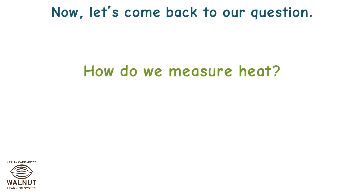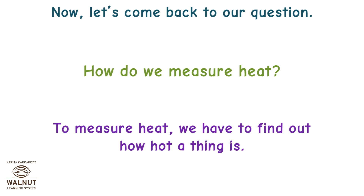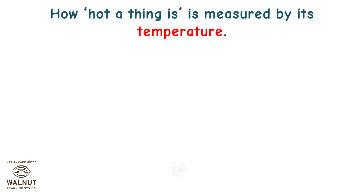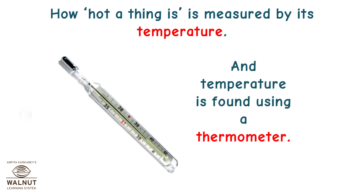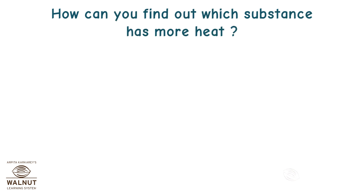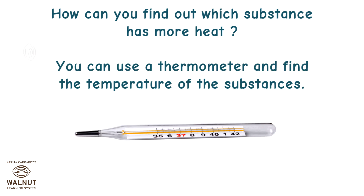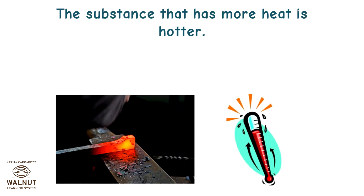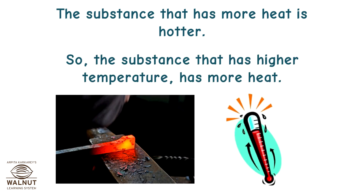Now let's come back to our question: how do we measure heat? To measure heat, we have to find out how hot a thing is. How hot a thing is, is measured by its temperature. And temperature is found using a thermometer. You can use a thermometer and find the temperature of the substances. The substance that has more heat is hotter, so the substance that has higher temperature has more heat.